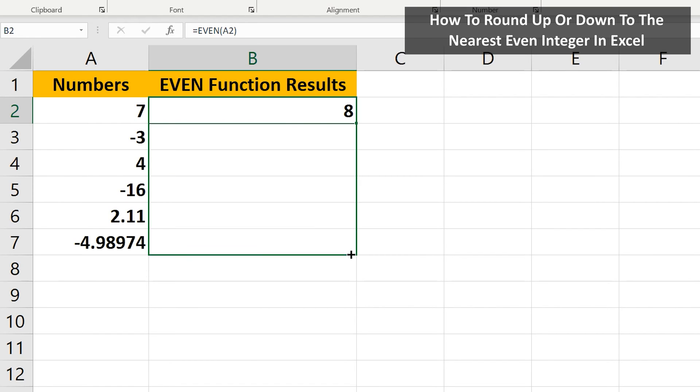I'll use the fill handle to fill in the rest of the column. As you can see, for negative 3, the output is negative 4, as it rounds negative numbers down to the nearest even integer.